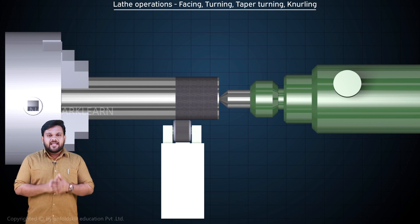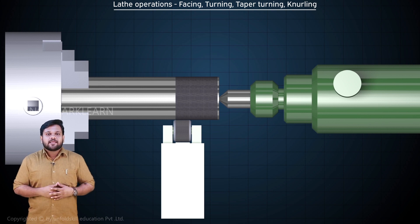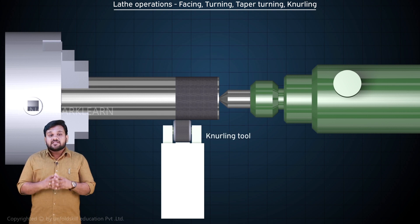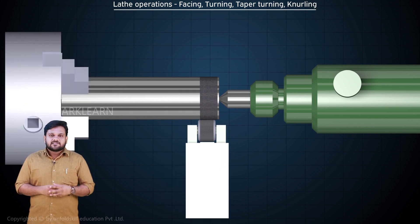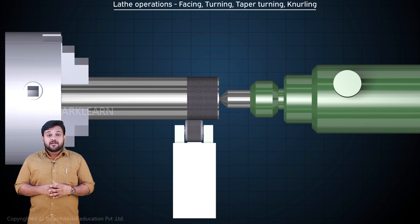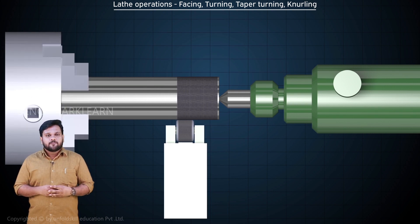Knurling is the operation of producing a rough diamond-like pattern on the workpiece. It is done using a knurling tool having the same diamond pattern. The tool is pressed on the cylindrical surface of the rotating workpiece. Along with that, the tool is moved along the length of the workpiece.